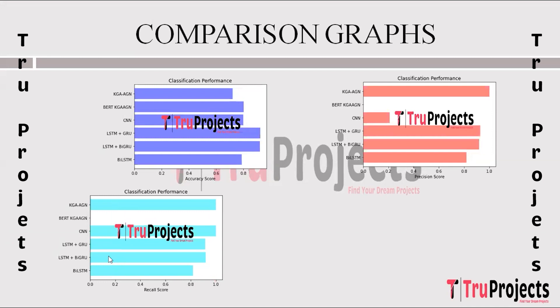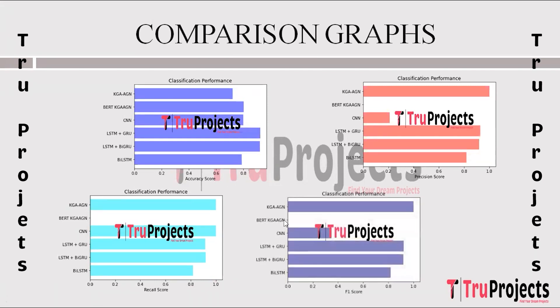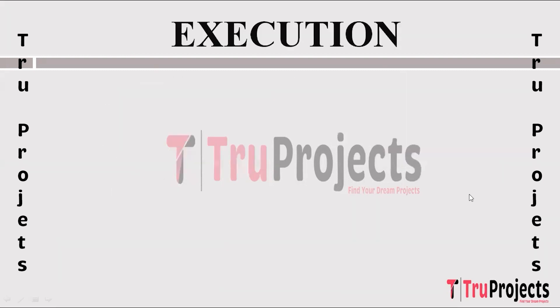The recall scores comparison graph shows recall — the ability to identify all relevant instances, measuring how many actual positives were correctly predicted. The F1 score comparison graph shows F1 score, which combines precision and recall into a single metric balancing accuracy and completeness. The best-performing algorithm across all metrics will be used for predictions.